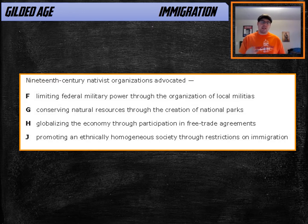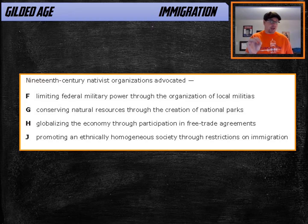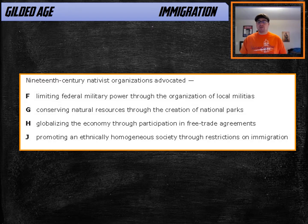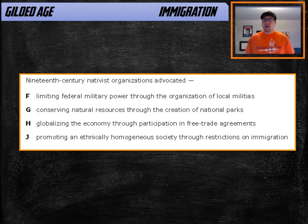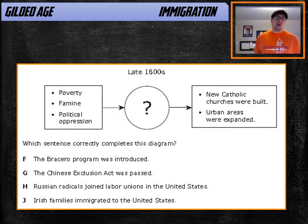Here is a simpler question on immigration: '19th century nativist organizations advocated what?' The key here is 'nativist.' You need to know that nativists were the violently, often hysterically and fanatically anti-immigrant groups. As you look through the answer choices, the last one mentions immigration and is really the only one that fits: 'promoting an ethnically homogenous society through restrictions on immigration.' It's wordy, but it's the answer that mentions immigration. Nativists basically wanted all Americans to have similar backgrounds, faiths, and experiences, and to achieve that they wanted to restrict immigration.